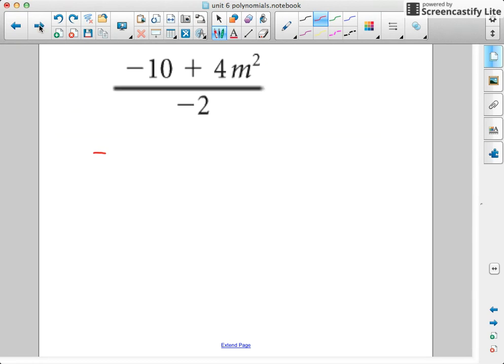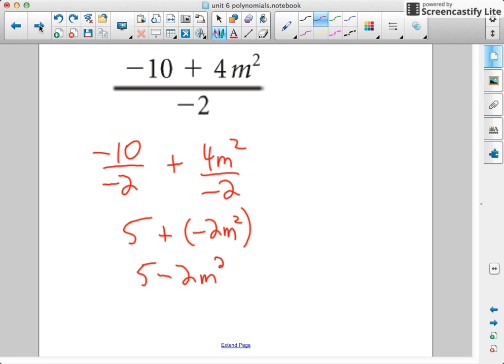Let's split these up. Negative 10 divided by negative 2 plus 4m squared divided by negative 2. I just split the top up into different fractions and I put my negative 2 under both. Now I'm going to divide them. Negative 10 divided by negative 2 is positive 5 plus 4 divided by negative 2 is negative 2m squared. So I could write that as 5 minus 2m squared as well. Just watch those negative signs.